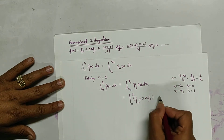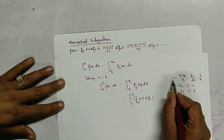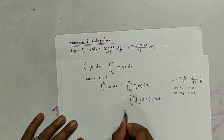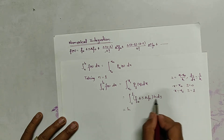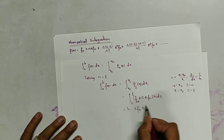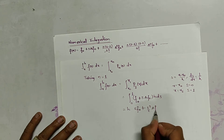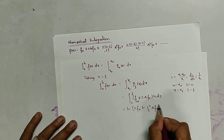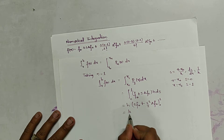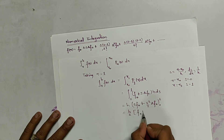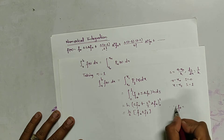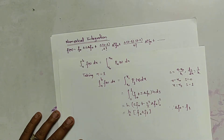Since dx equals h·ds, we integrate h·(f0 plus s·Δf0) ds from 0 to 1. Integrating with respect to s gives s·f0 plus s²/2 · Δf0, evaluated from 0 to 1. This simplifies to h/2 · (f0 plus f1), since Δf0 equals f1 minus f0. This is equation 1.